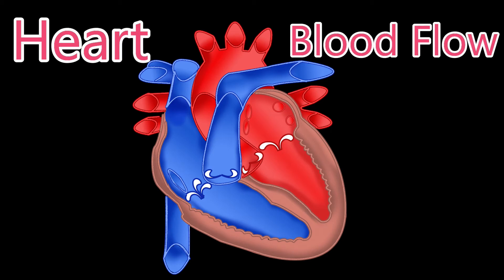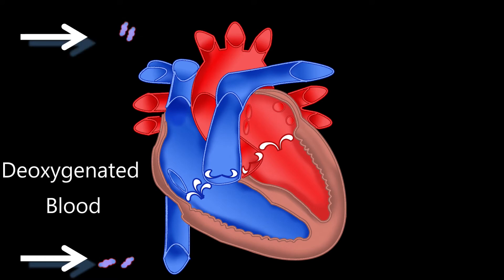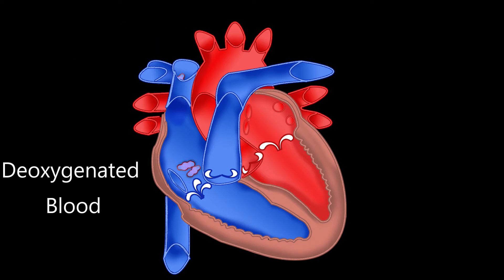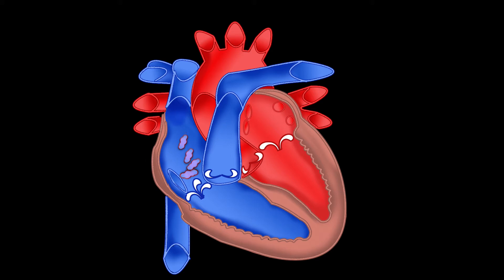The oxygen-poor blood enters the right side of the heart and is represented by the blue illustration shown here. Blood enters the heart through two large veins: you have the inferior, which is the bottom, and the superior, which is the top, vena cava. The oxygen-poor blood from the body enters into the right atrium of the heart.